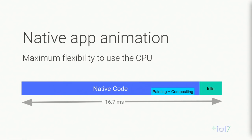In a native app, you have more predictability — much less idle time is required because there are no surprise garbage collections. Threads are under the control of developers, so you control workload and don't worry as much about scheduling. Input events can be coalesced, making their time consumption more predictable.